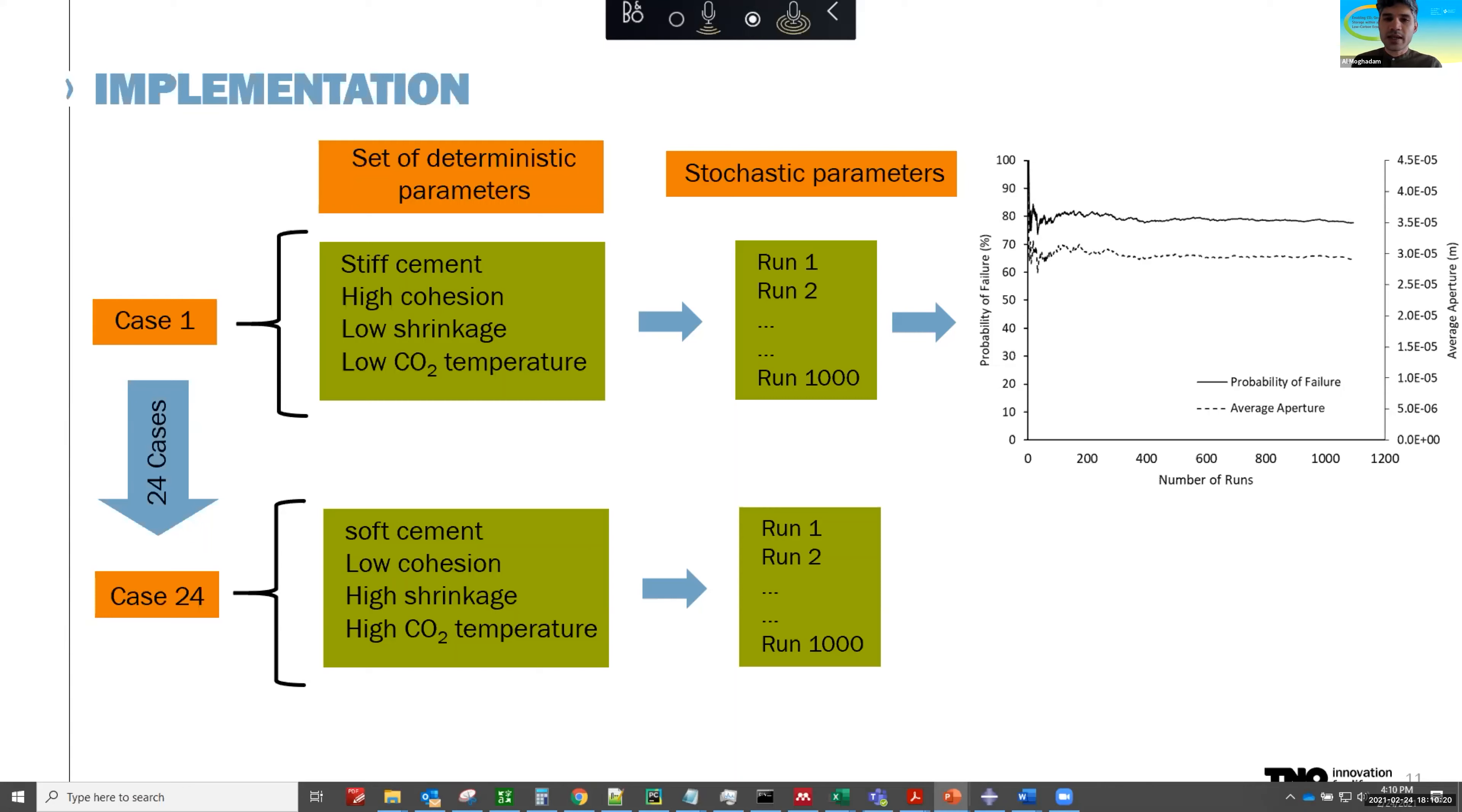And we can look at each simulation, find out if there has been any cement failure, what kind of failure, if it's a microannulus formation, what kind of apertures to expect. And we can plot this versus the number of runs. So we have the probability of failure based on the number of runs, and you can see that eventually it flattens out. So 1000 simulations seems to be enough to capture the uncertainty in the parameters here. And I've also plotted the aperture for this example. So for this case, it seems like there's an 80% chance of failure. For 80% of the cases, the well is going to fail, or at least the microannulus is going to be formed.